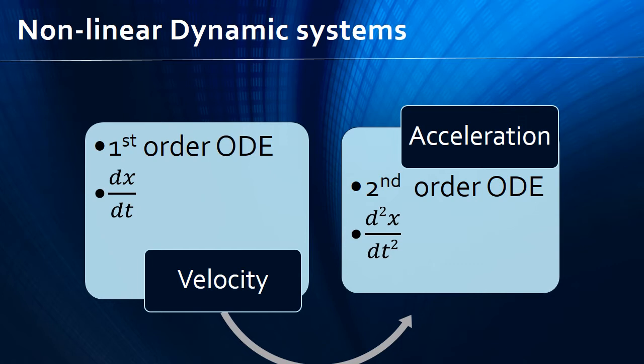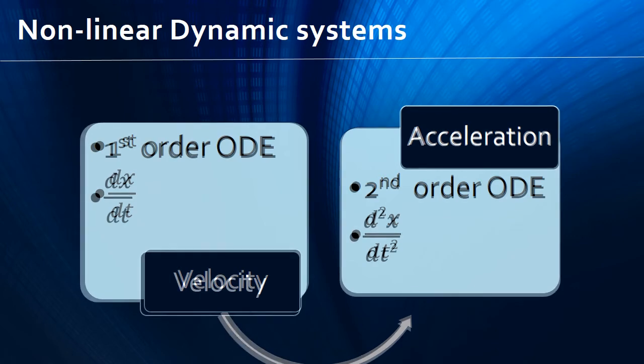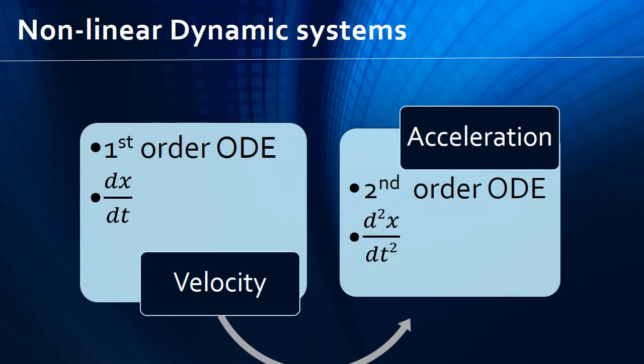We are familiar with the terms displacement, velocity and acceleration. The next higher order derivative of velocity is acceleration. We all know that acceleration is defined as the rate of change of velocity with respect to time. We experience velocity when we move and we experience acceleration when we change the velocity at which we move. For example, when we are traveling in a car, we do not feel the velocity but only the change of velocity — that is acceleration — which is brought by the force exerted.